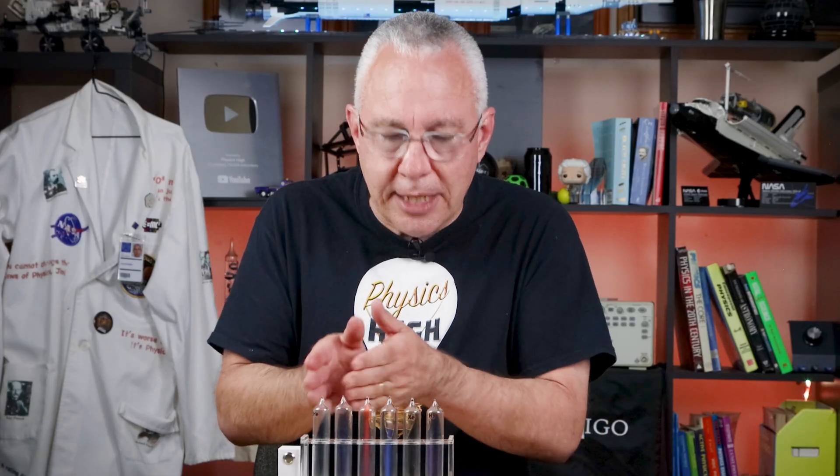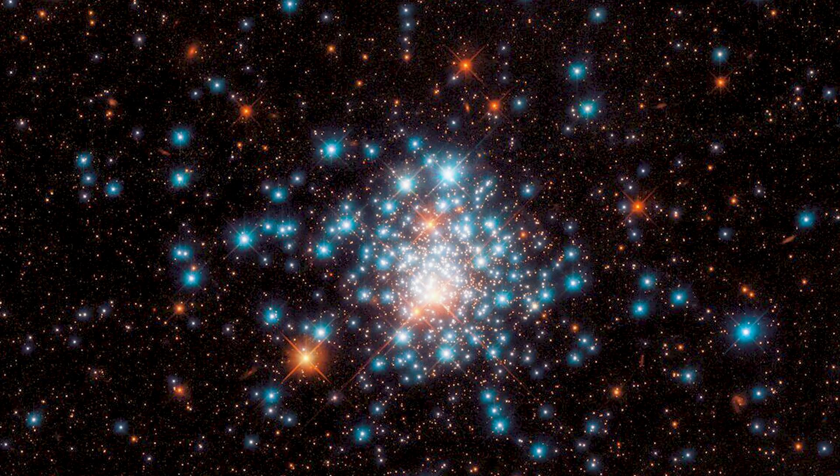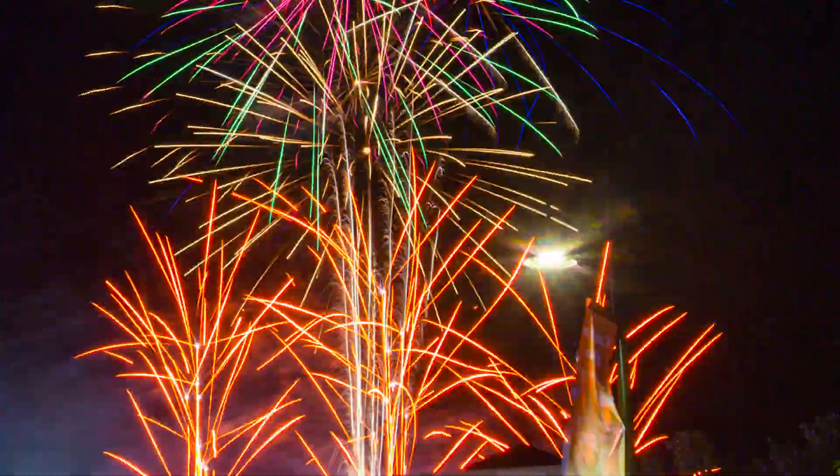Now the elements that are in these tubes have their own signature color because the atoms that they are composed of emit very specific wavelengths of light. It's the same principle we use to identify elements in stars, streetlights, and even fireworks.